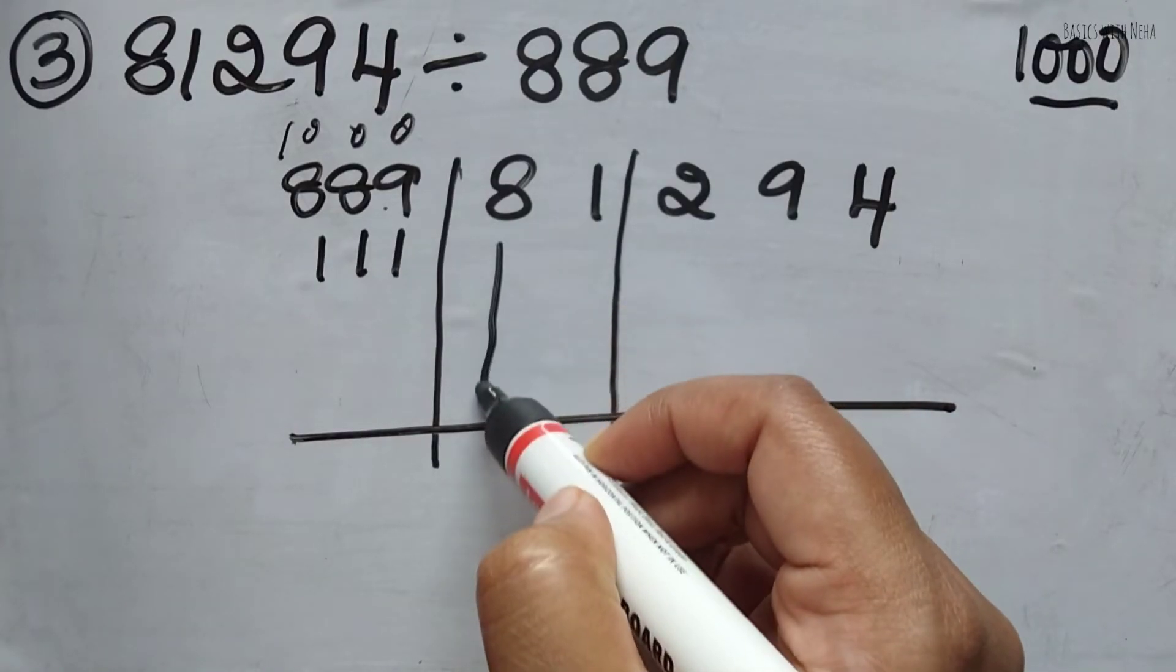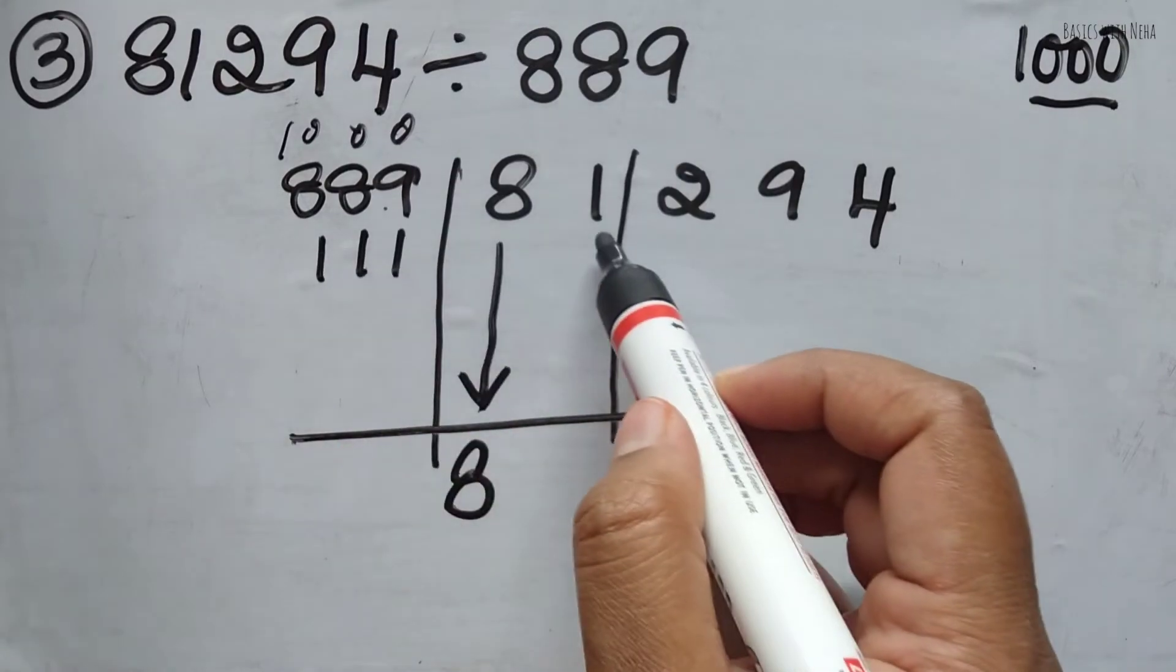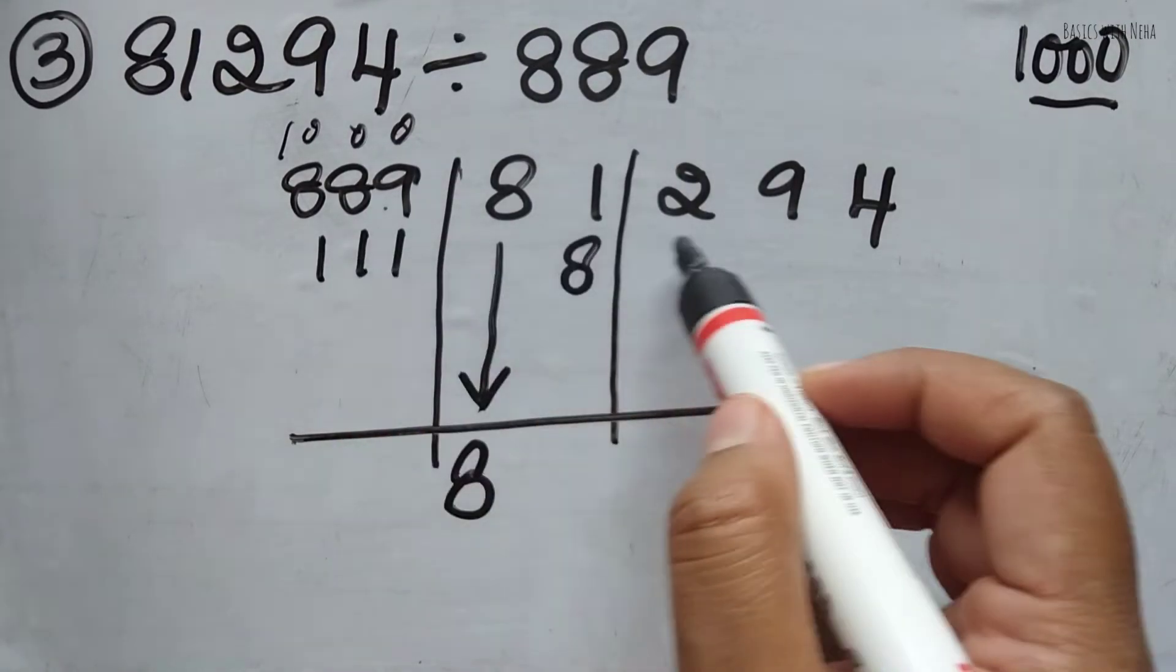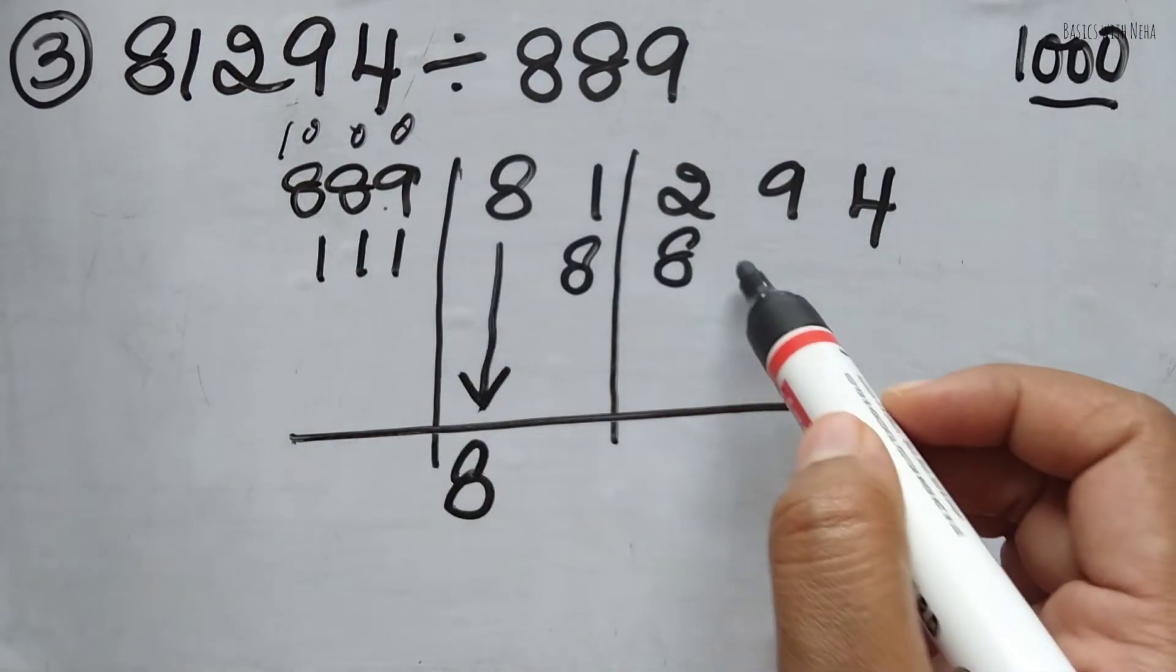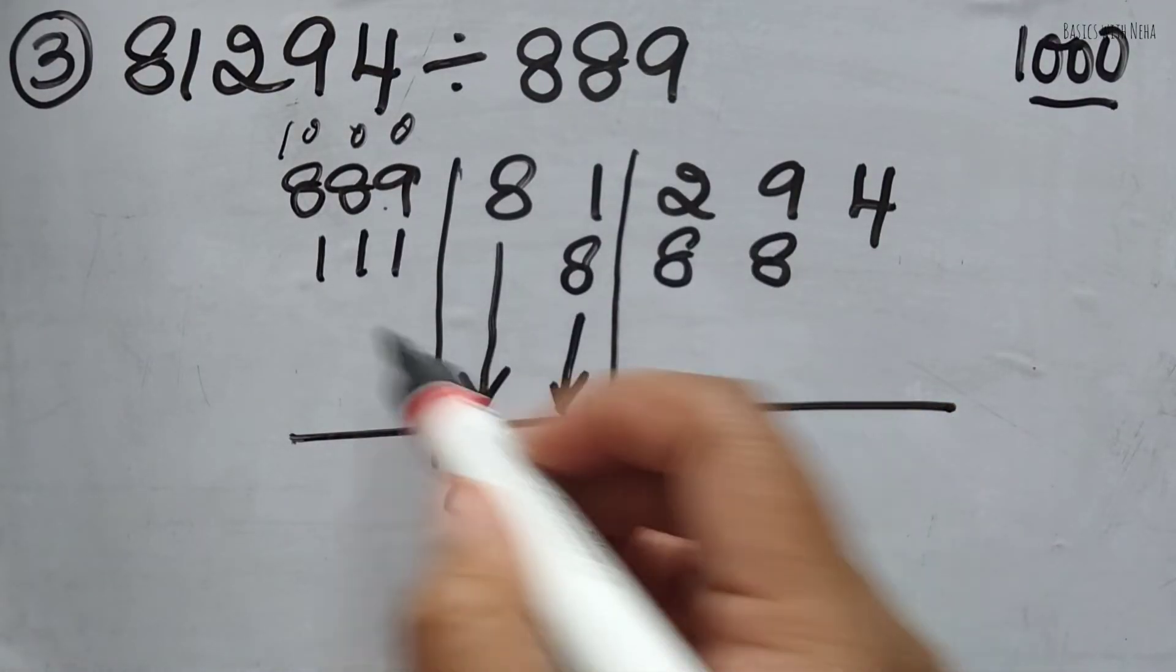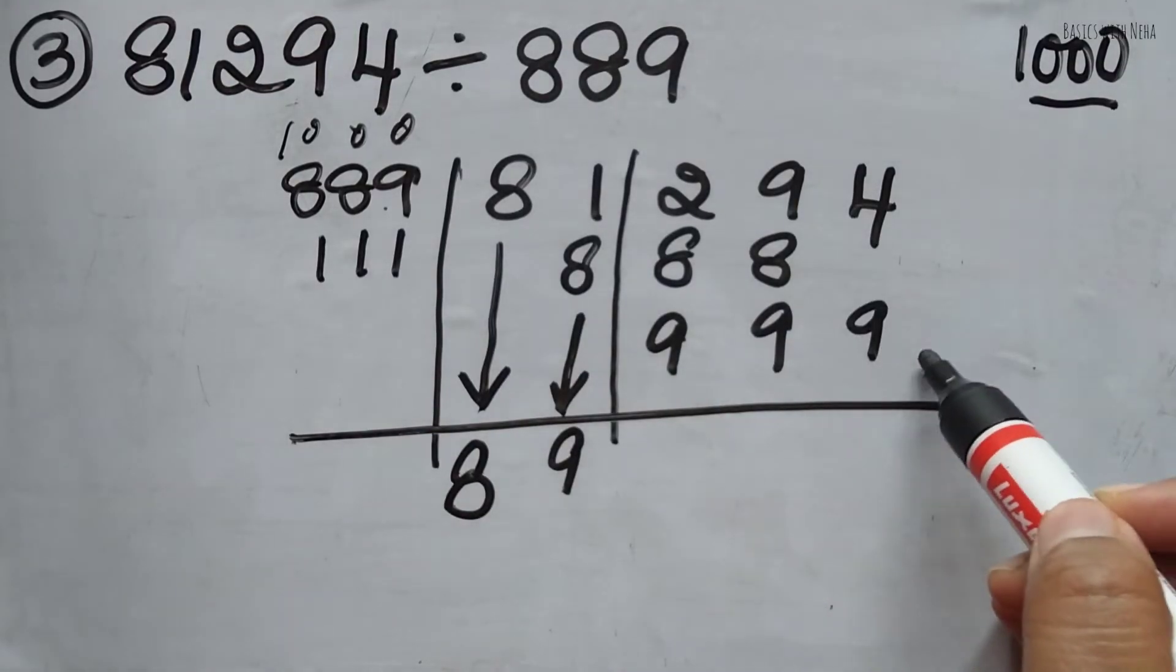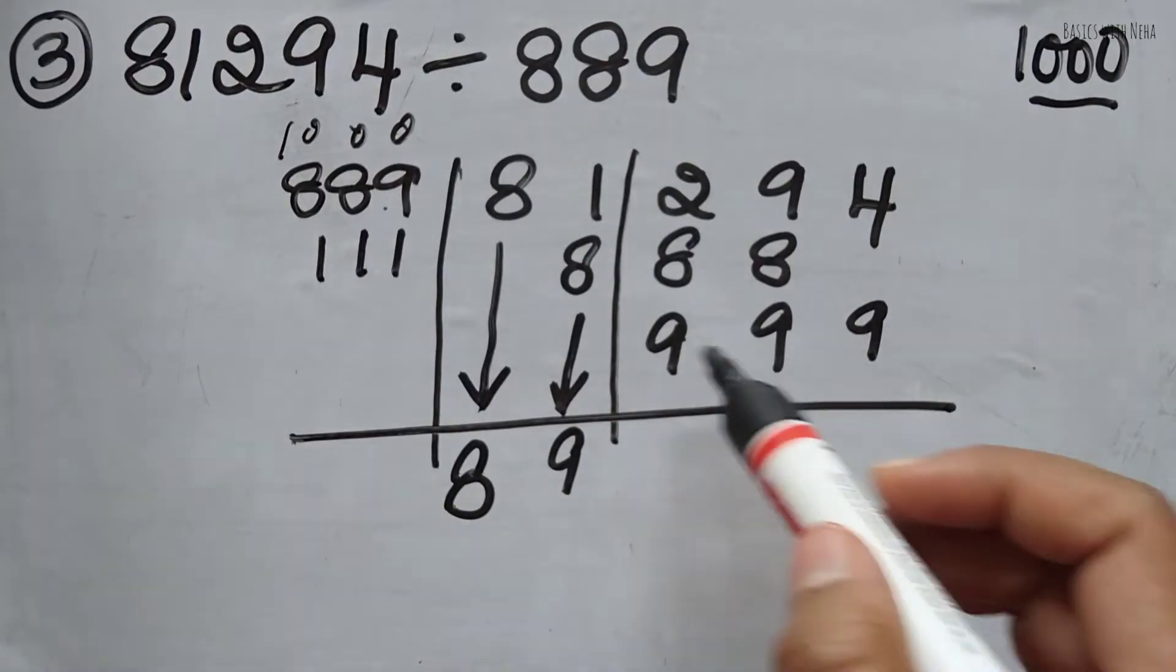Now, the first digit, I'm going to write it as it is, which will come as 8. 8 times 1 is 8, repeated for each position. Now I have to add these two, which is 9. 9 times 1 is 9, repeated for each position. I've come to the last digit here, so I'm going to stop it there.